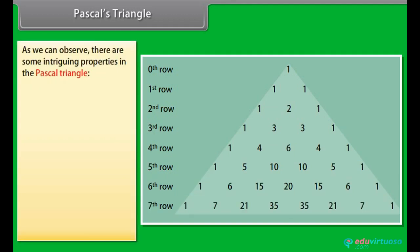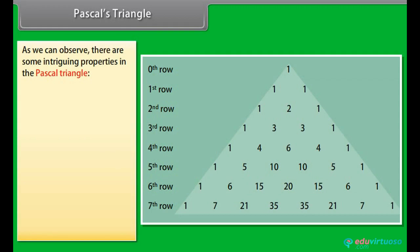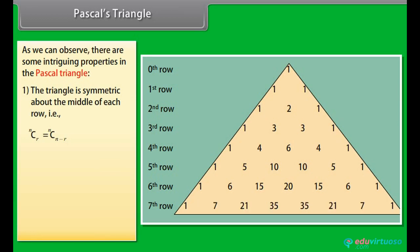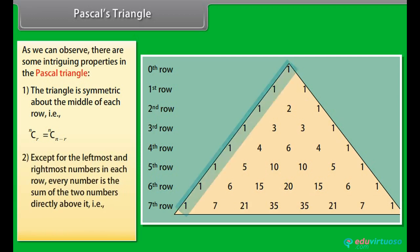As we can observe, there are some intriguing properties in Pascal's triangle. The triangle is symmetric about the middle of each row. That is, nCr is equal to nC(n − r).